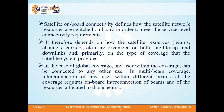Satellite onboard connectivity is an important point. It defines how the satellite network resources are switched onboard in order to meet the service-level connectivity requirements. It depends on how the satellite resources — that is beams, channels, carriers, etc. — are organized on both satellite uplink and downlink, and primarily on the type of coverage the satellite system provides. In the case of global coverage, any user within the coverage can be connected to any other user, while in multi-beam coverage, interconnection of users within different beams requires onboard interconnection of beams and the resource units allocated to those beams.